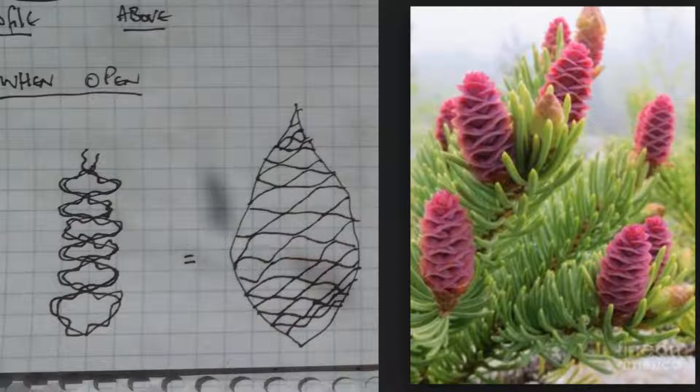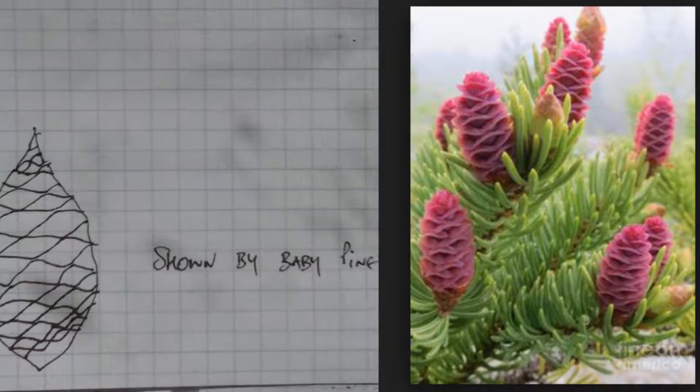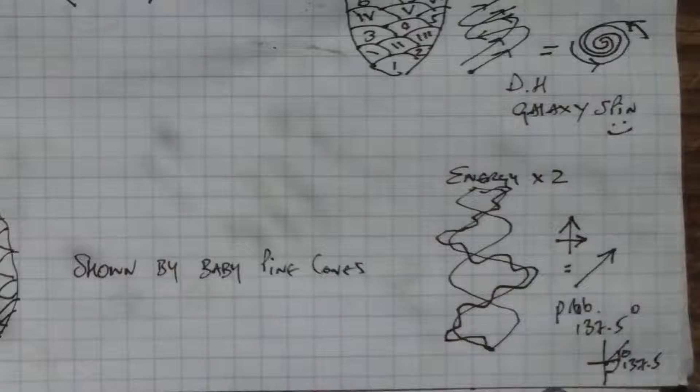Now when it's open, it shows not only is it a double helix rotation galaxy spin all the way up, but each wave is also a double helix traveling in the actual spiral. So when it's open you can see the double helix, and this is shown by baby pine cones here.